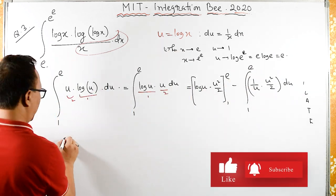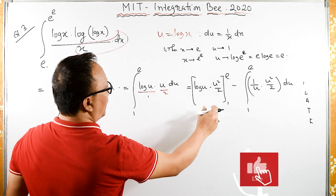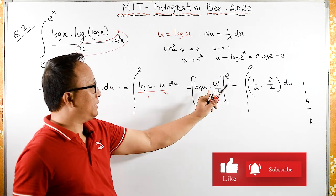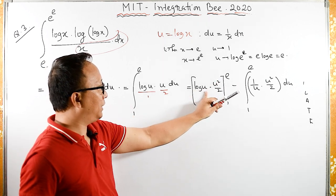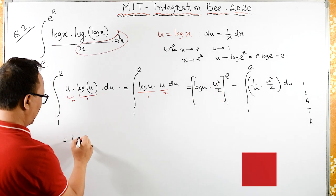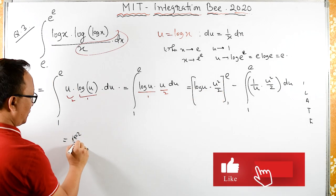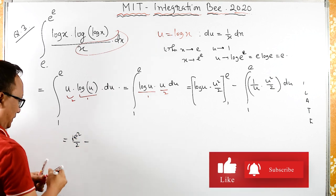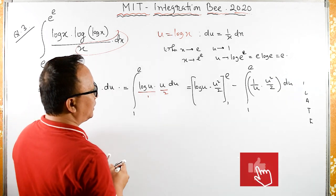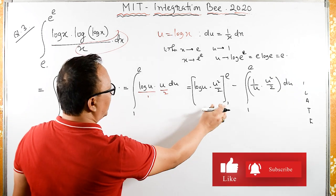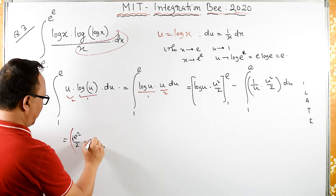Substituting the upper limit: log e is 1, times e squared upon 2. At the lower limit, log 1 is 0, so everything becomes 0.